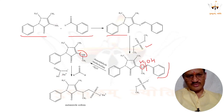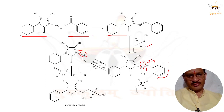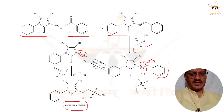A sulphuric acid reaction (H2SO3) is carried out, and finally we get the product metamizole sodium, which can be generated and marketed.